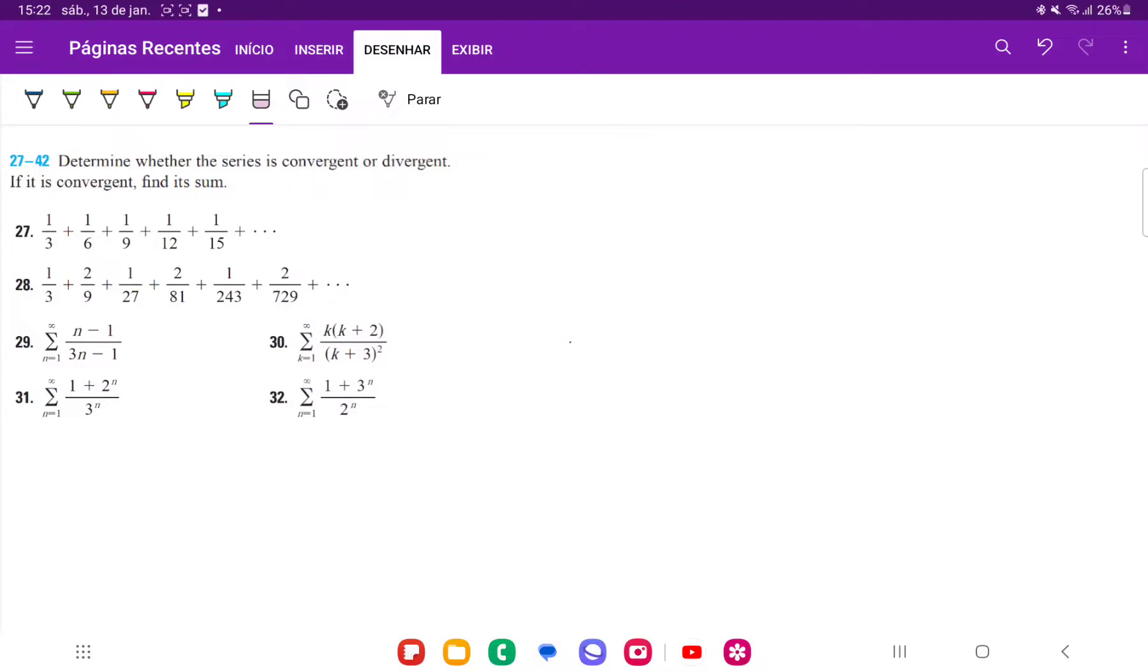Okay, so for 27, we want to determine whether the series is convergent or divergent. Now, for 27, this is an arithmetic sum, because we can see that each term from one to another increases in a constant way, right? It's not multiplicative.